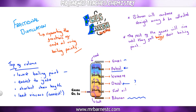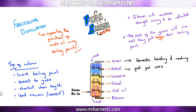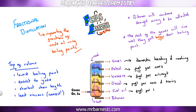The last thing to know on fractional distillation is the uses. Gases are used in domestic heating and cooking. Petrol is used as a fuel for cars. Kerosene is a fuel for aircraft. Diesel is a fuel for cars and trains. Fuel oil is a fuel for large ships and power stations, and bitumen is used for surfacing roads and roofs.